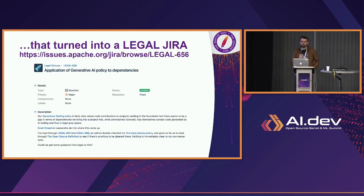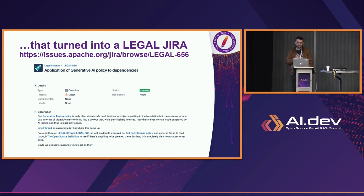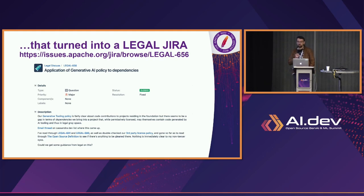But the blog post turned into a legal JIRA. For those unfamiliar with how we do business in Apache — Apache is a software development organization, so everything we do, including legal things we discuss, is mediated through JIRA. So if anybody has a request, be it for code change or for clarification, it always ends up in a JIRA. We have a legal side to JIRA in Apache, and that blog post generated quite a discussion. At the end of the blog post, Jonathan basically said he's contributing a lot of the work he did researching Gen AI tools back to the community, as he always does.